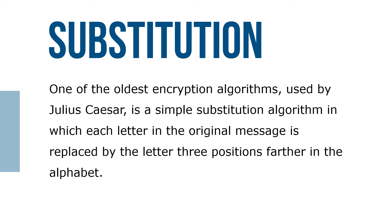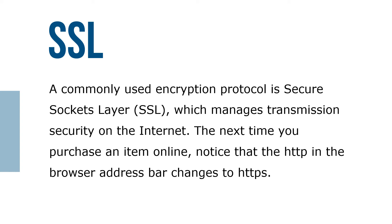One of the oldest encryption algorithms, used by Julius Caesar, is a simple substitution algorithm in which the letter in the original message is replaced by the letter three positions farther in the alphabet. A commonly used encryption protocol is Secure Sockets Layer, known as SSL, which manages transmission security on the internet. The next time you purchase an item online, notice that the HTTP in the browser address bar changes to HTTPS.